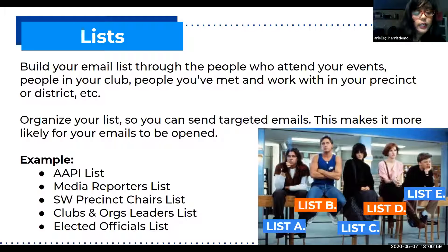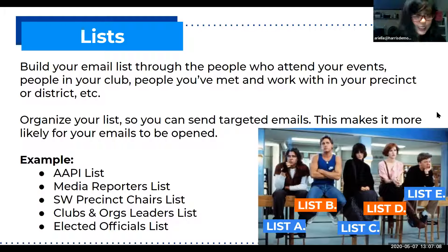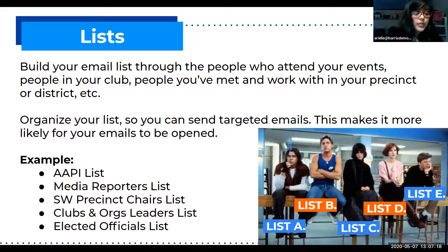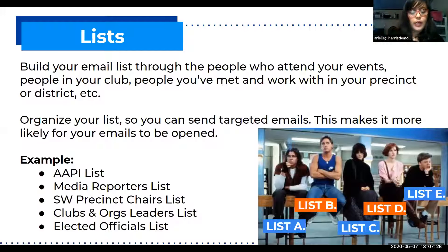For example, take a graphic of a group of high school teens — they're all high school teens but they all have different interests. For the Democratic Party, I have a list that's all Democrats, but there's the Asian American advocate Democrats, the reporters, the precinct chairs, the club and org leaders. I have all these different lists, so I have targeted emails for all those different people.